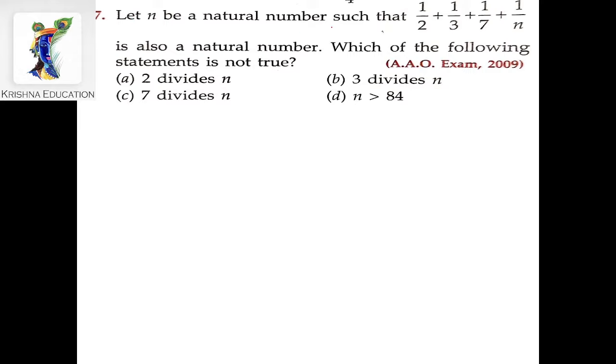Let n be a natural number such that 1/2 + 1/3 + 1/7 + 1/n is also a natural number. Which of the following statements is not true? We have four options and need to find which statement is not true given that n is natural.